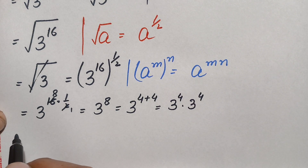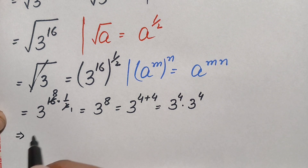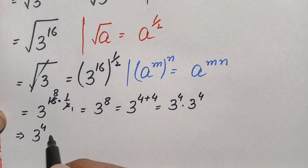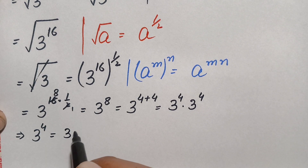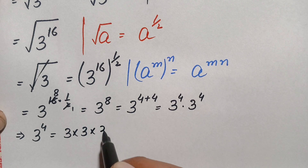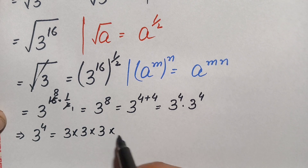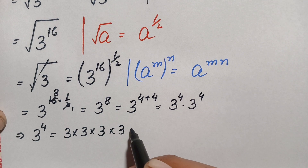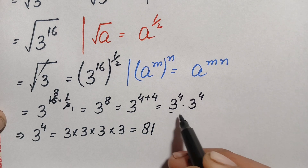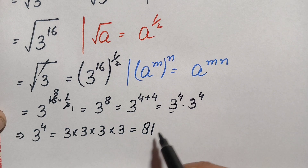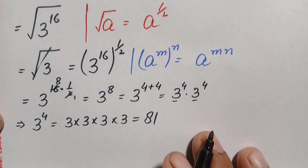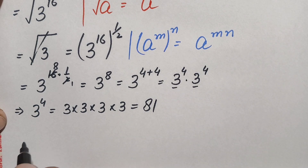Finding 3 raised to the power 4 is simpler. We calculate: 3 times 3 is 9, 9 times 3 is 27, 27 times 3 is 81. So the value of 3 raised to the power 4 is 81. We replace both instances with 81, giving us 81 times 81.